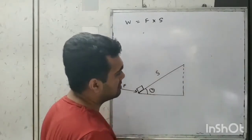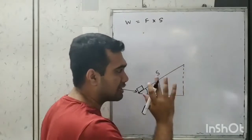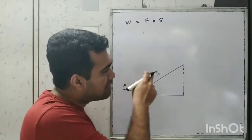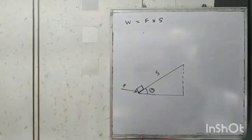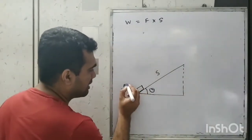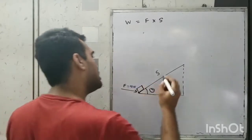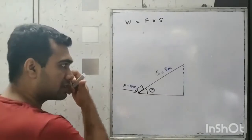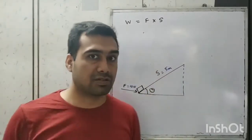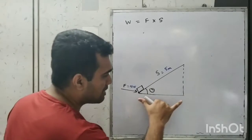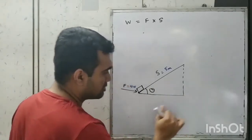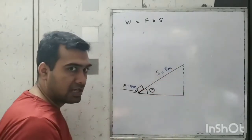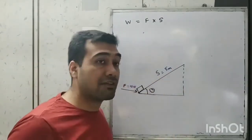Let the displacement be S, which is the hypotenuse of this triangle. When we calculate work, it's force multiplied by displacement in the direction of force. So if the force is 10 newtons and displacement is 5 meters, we cannot simply say work done is 10 into 5 = 50 joule, because we need the displacement in the direction of force, which will be smaller than 5 meters.